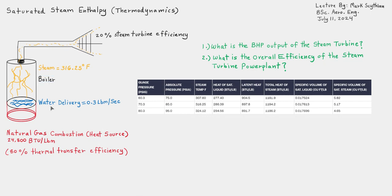Here we have a steam boiler with a flow rate of 0.3 pounds per second water input, and a heat source — in this case natural gas combustion. We have 80% thermal transfer efficiency, so we lose 20% of the heat delivered into the boiler as the natural gas combustion vaporizes the water to a specified steam temperature of 316.25 degrees Fahrenheit. The steam is then released through a discharge nozzle to the steam turbine inlet.